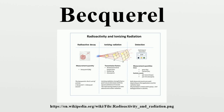The Becquerel is the SI-derived unit of radioactivity. 1 Bq is defined as the activity of a quantity of radioactive material in which one nucleus decays per second. The Bq unit is therefore equivalent to an inverse second, s⁻¹. The Becquerel is named after Henri Becquerel, who shared a Nobel Prize with Pierre Curie and Marie Curie in 1903 for their work in discovering radioactivity.